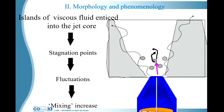The physical interpretation is that three kinds of instabilities are born at the edges: instabilities due to viscosity variation stratification, Kelvin-Helmholtz instabilities associated with the jet, and sometimes instabilities at the wake created by the injector. Because of that, islands of viscous fluid are enticed into the jet core, creating stagnation points that stop the mean velocity — so the decay of mean velocity is much faster. The fluid stops because it enters a much more viscous environment, lateral fluctuations are born, transition to turbulence is accelerated, and mixing increases.